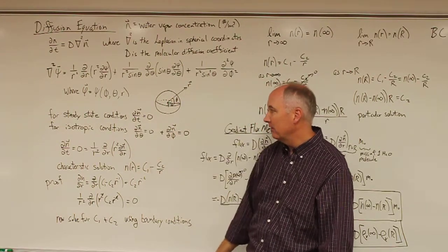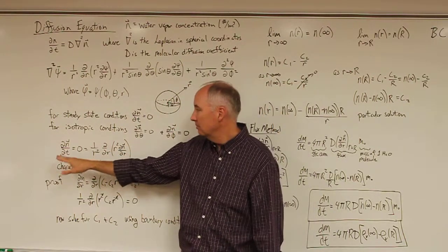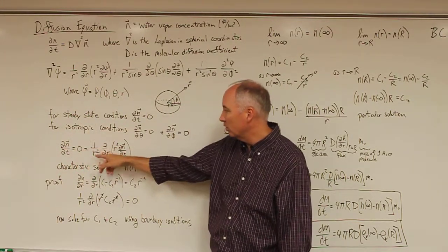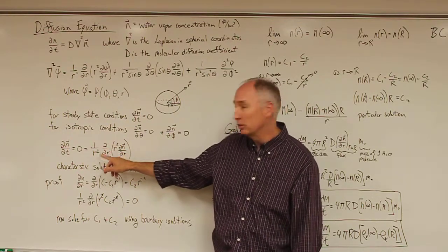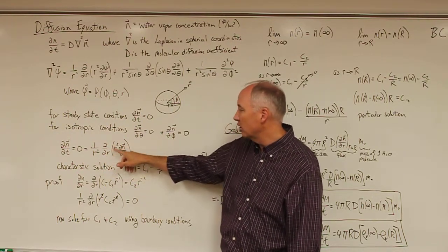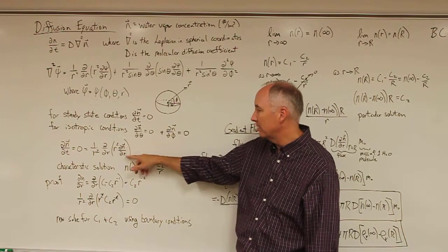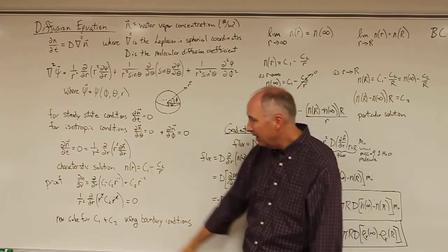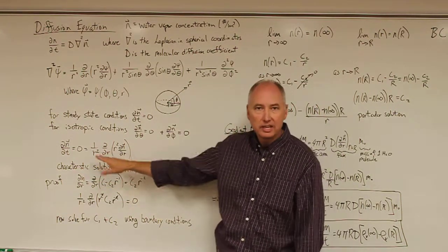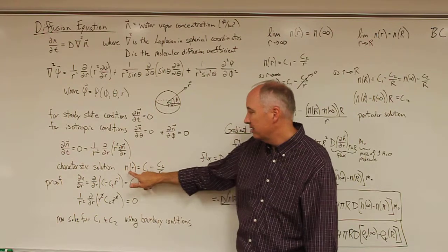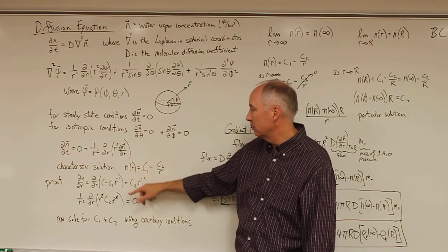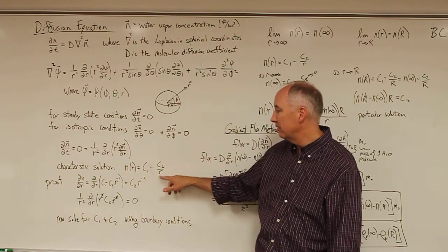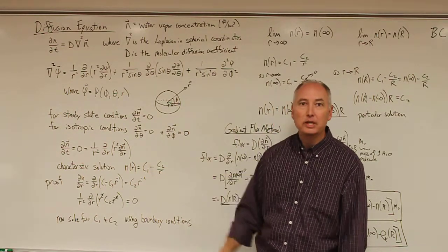With those assumptions, the steady state approximation reduces to: 0 equals 1 over r squared times the partial derivative with respect to radius of r squared times the partial with respect to r of the number concentration. The characteristic solution for this steady state approximation is that the number concentration of water vapor molecules equals a constant C1 minus constant C2 divided by r.